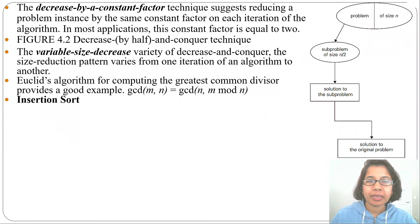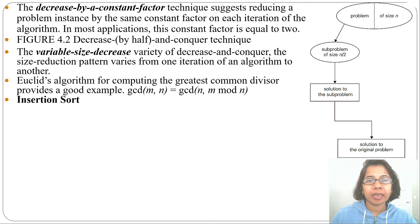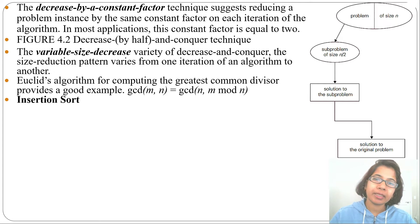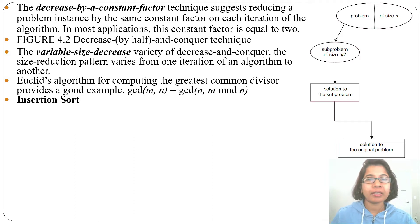In the previous lecture I discussed decrease and conquer technique. There are three types: decrease by constant, decrease by a constant factor, and variable size decrease. Now we'll discuss the first application of decrease and conquer.